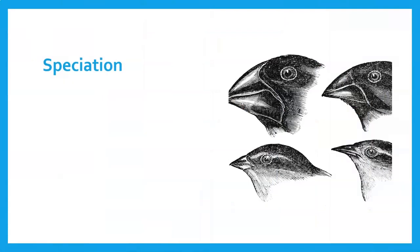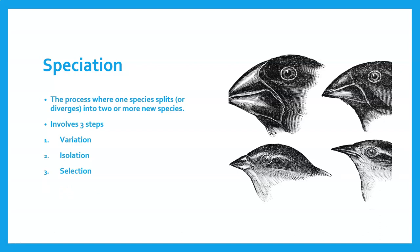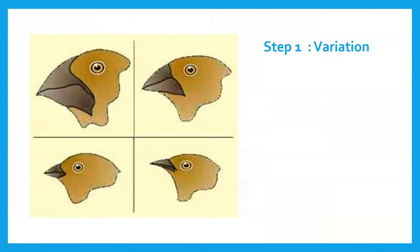I've got some flies there looking at speciation, and a diagram of Darwin's finches that we've spoken about many times. Speciation is a process where one species splits or diverges into two or more species, and it involves three main steps: variation, isolation, and selection. Let's look at those a bit closer.